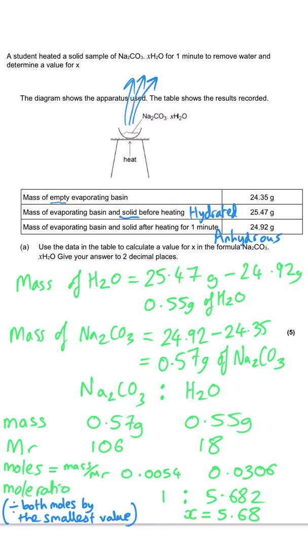In terms of how this mark breaks down, you'd get one mark for the two masses, another mark for the moles of sodium carbonate, and another mark for the moles of water. The fourth mark would be for this ratio, dividing them both by the smallest. And the fifth mark would be for our final answer for X.